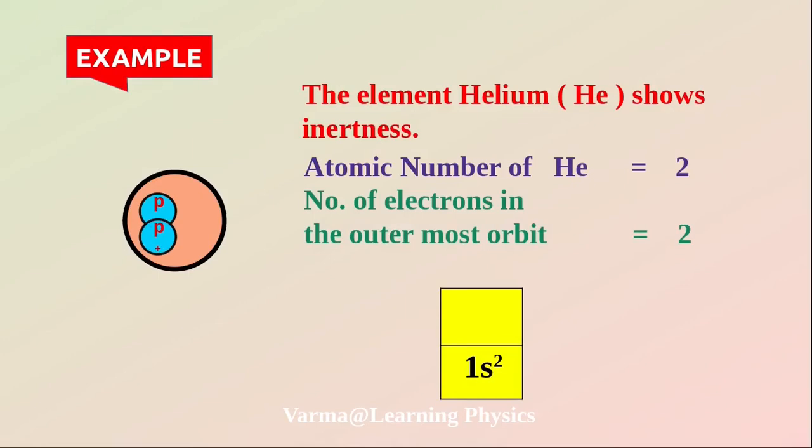Helium shows inertness. The atomic number of helium is 2, and the number of electrons in the outermost orbit is 2 electrons.